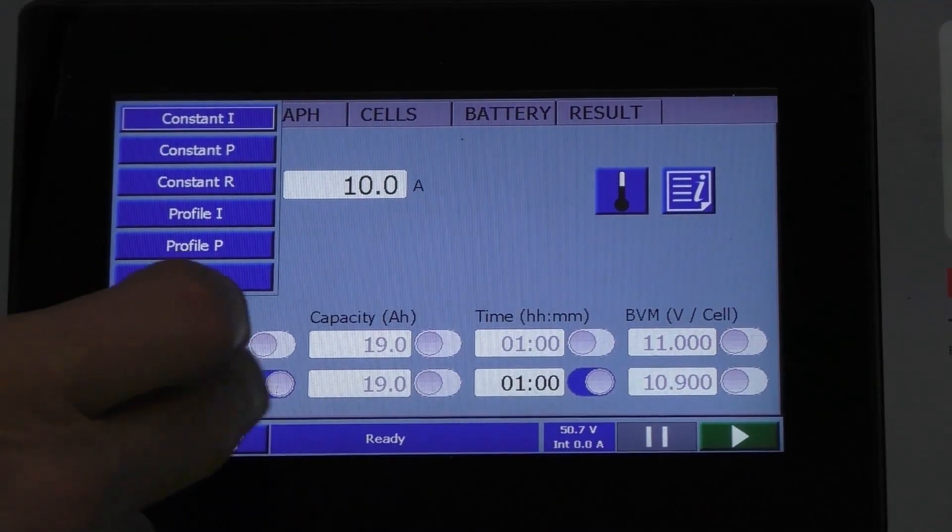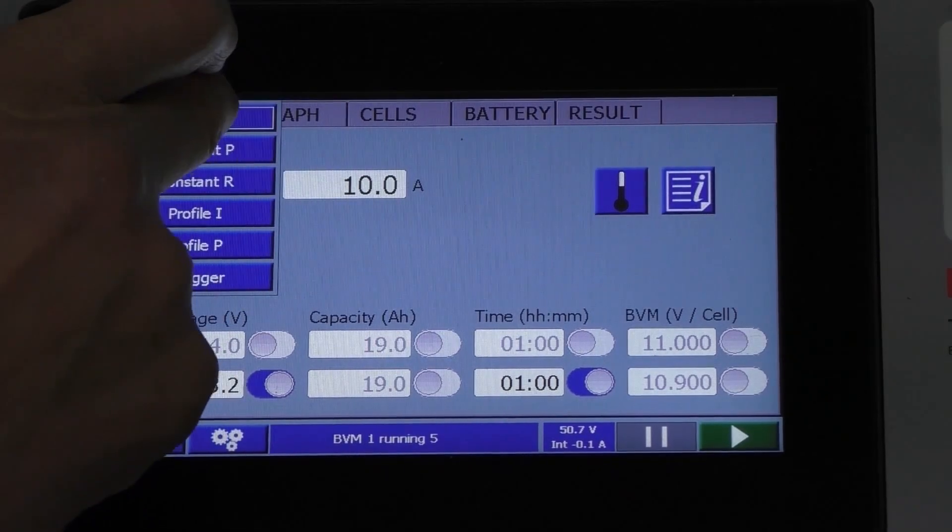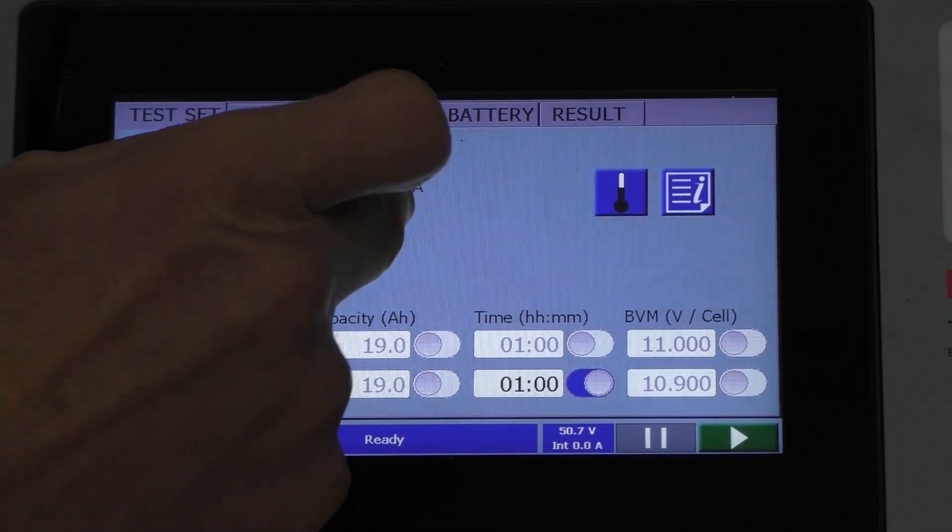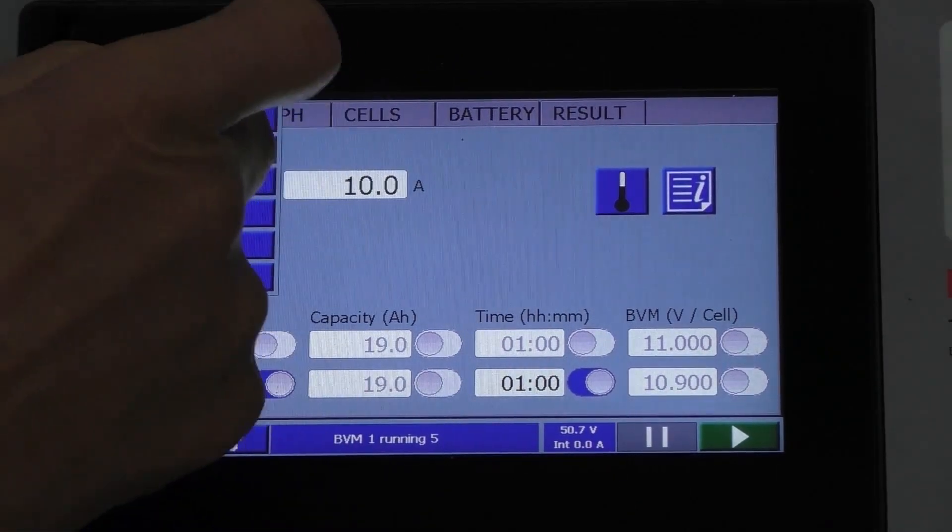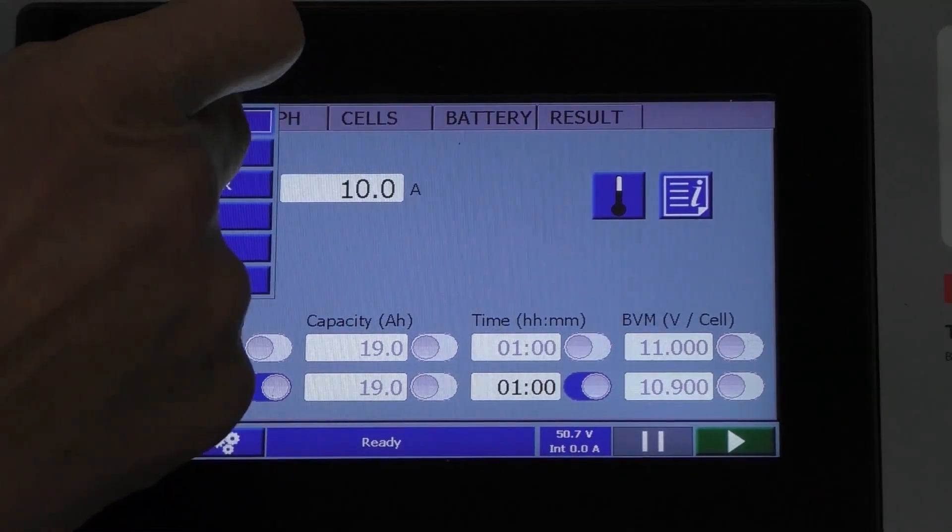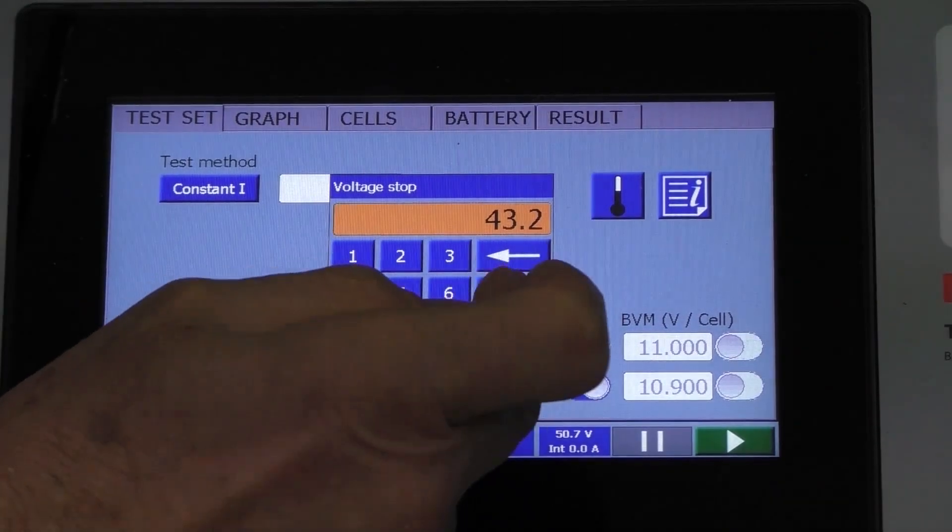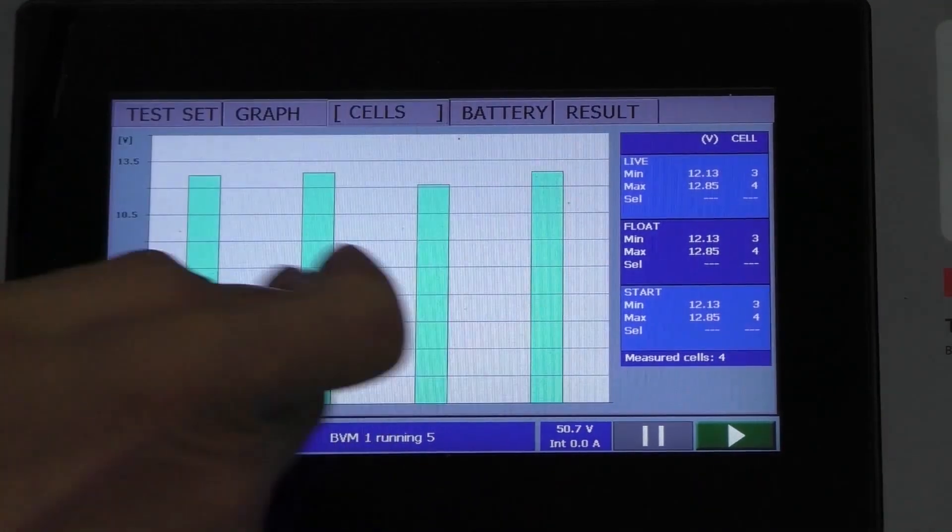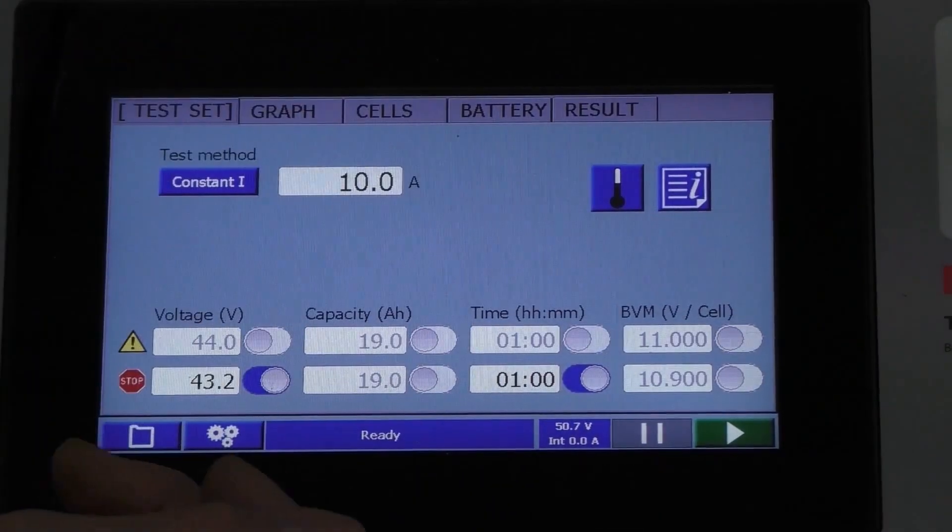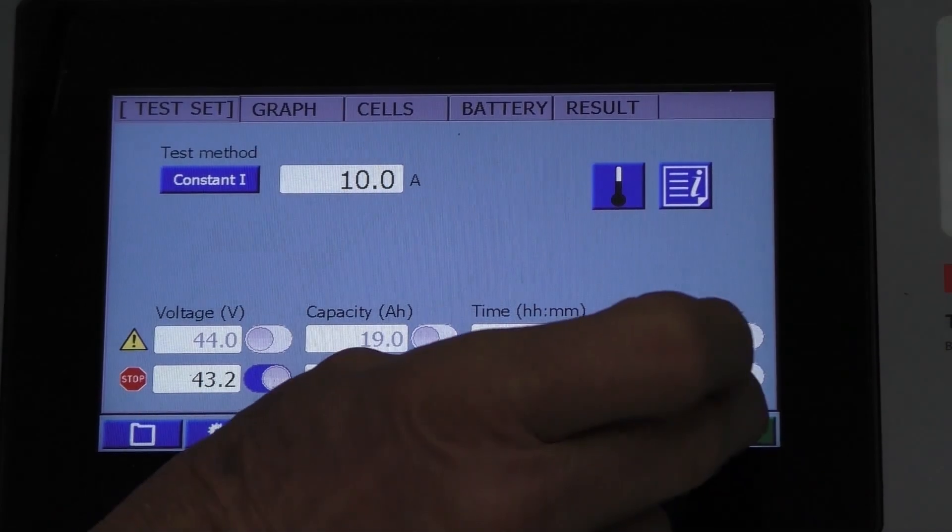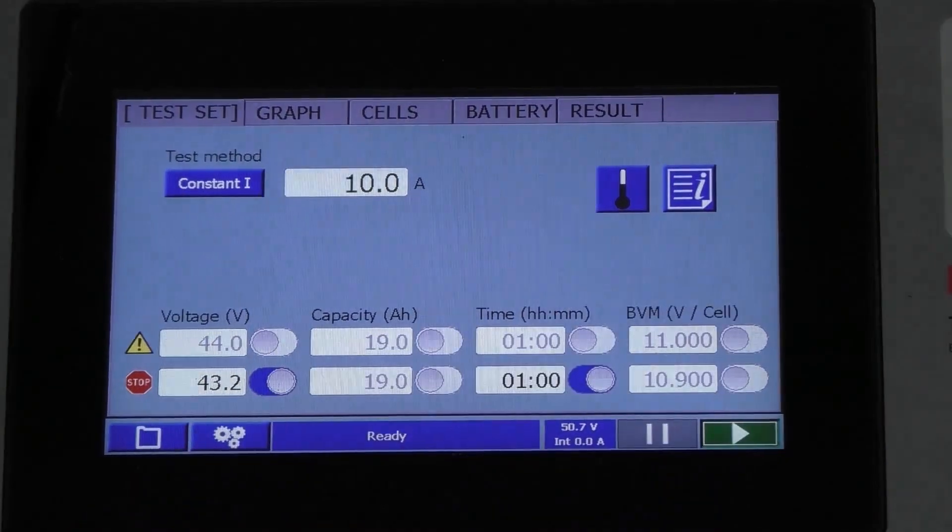Now I just hit the constant current. We can enter current, we just click on that cell and enter those figures in. Now we can also see the voltages over here. So now we hit the test start. I'm going to hit start on this. Fans kick up.